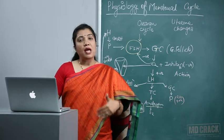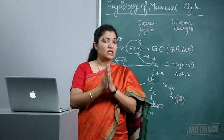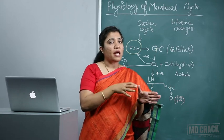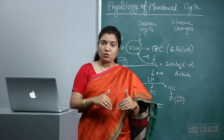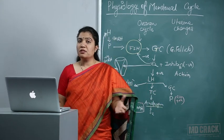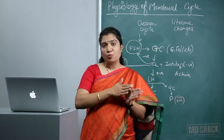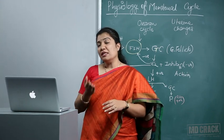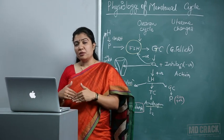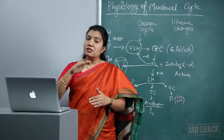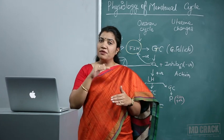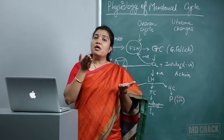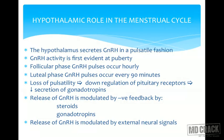The hypothalamus secretes GnRH, which acts on the anterior pituitary to secrete FSH and LH. These act on the ovary; estrogen and progesterone are produced according to the phase. Estrogen causes proliferative changes in the endometrium, and progesterone acts on the estrogen-primed endometrium causing secretory changes. These hormones have negative feedback on GnRH, decreasing FSH and LH, leading to decreased estrogen and progesterone, withdrawal of hormones, and shedding of the endometrium.